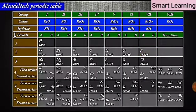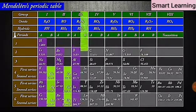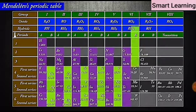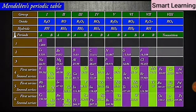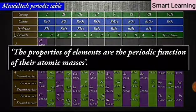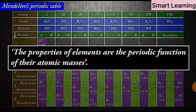It was also observed that there occurs a periodic recurrence of elements with similar physical and chemical properties. On this basis, Mendeleev formulated a periodic law which states that the properties of elements are the periodic function of their atomic masses.